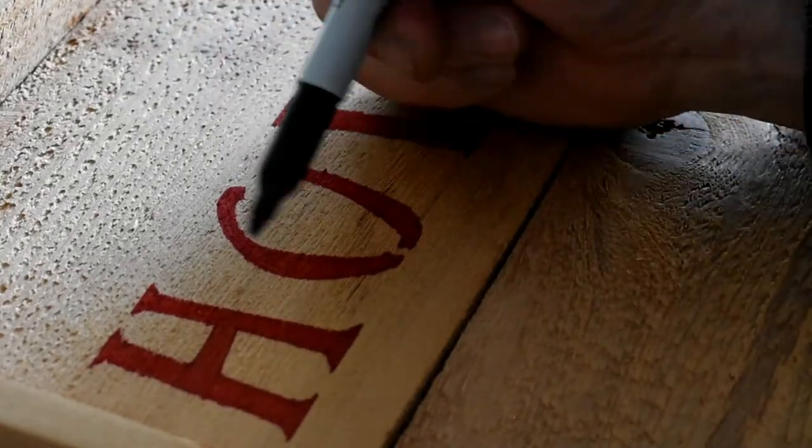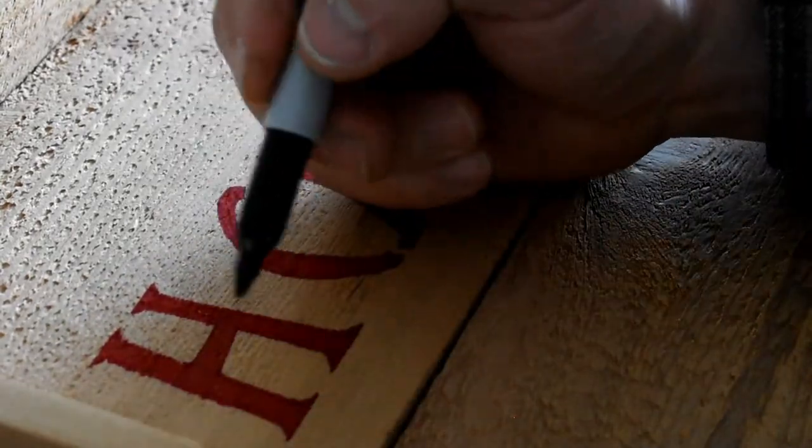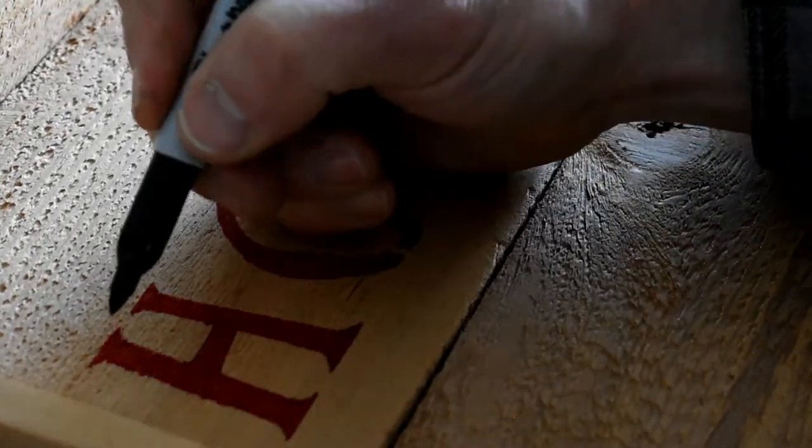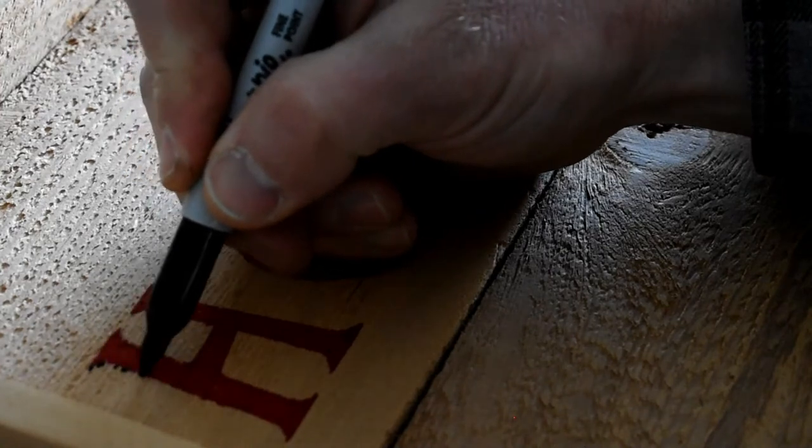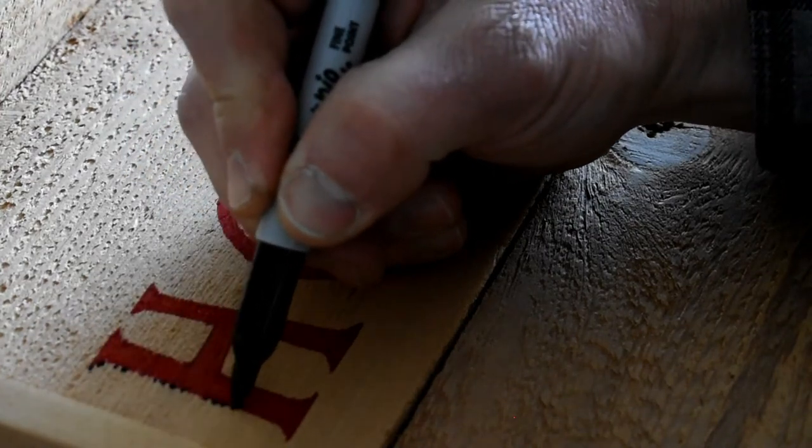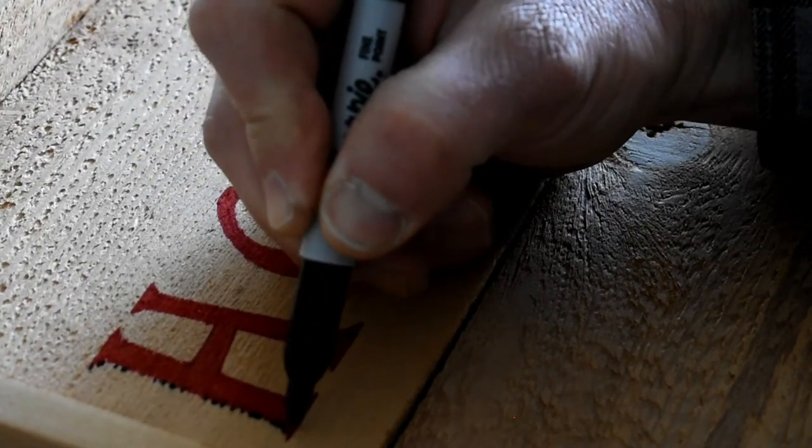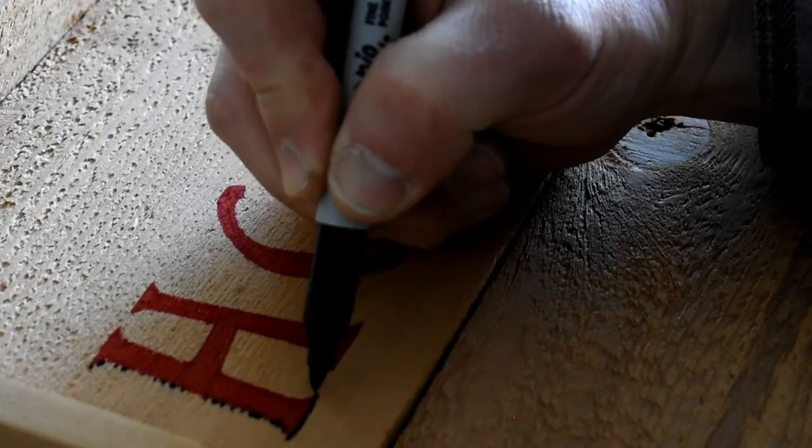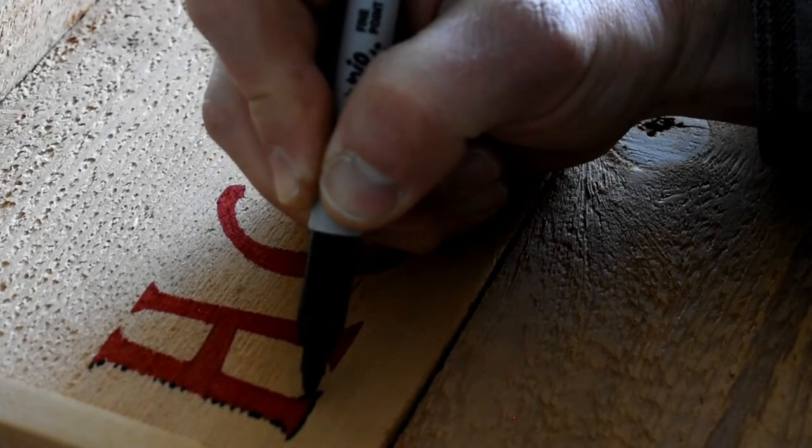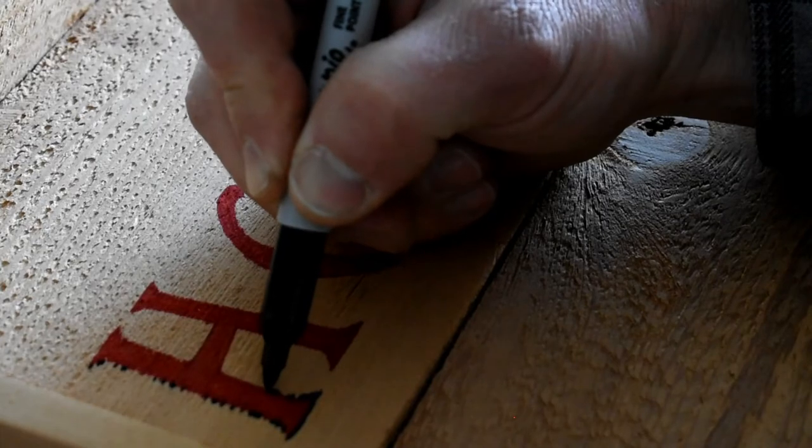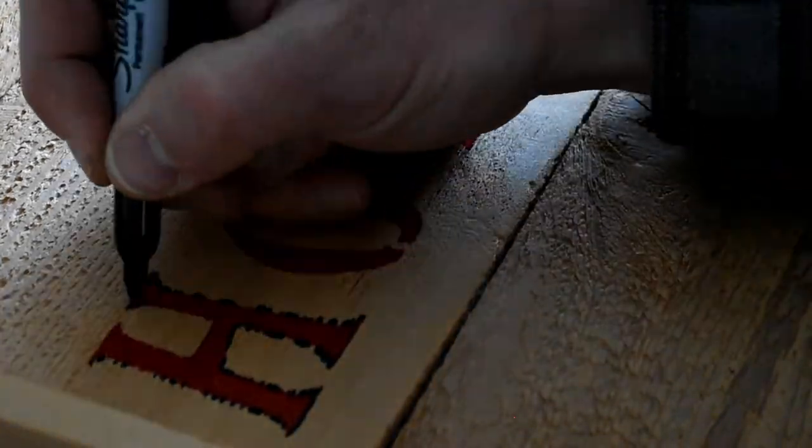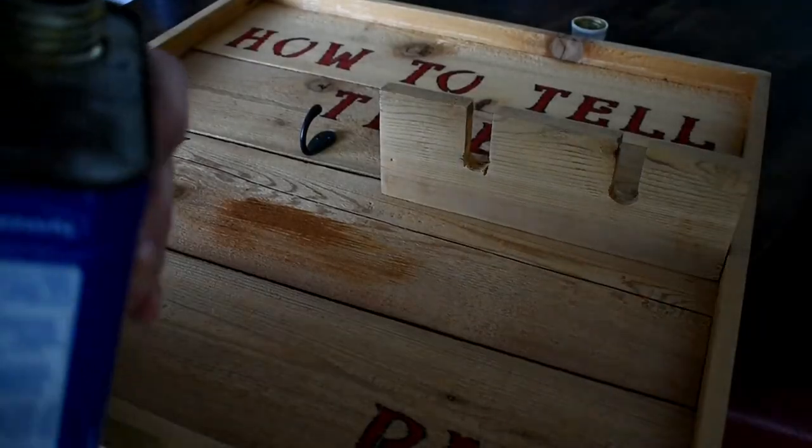All right, for this last part, I kind of like to trace around here. And I don't actually trace all the way around it. I kind of just dot like this real light because the Sharpies have a tendency to run on the wood. They kind of soak into the wood.